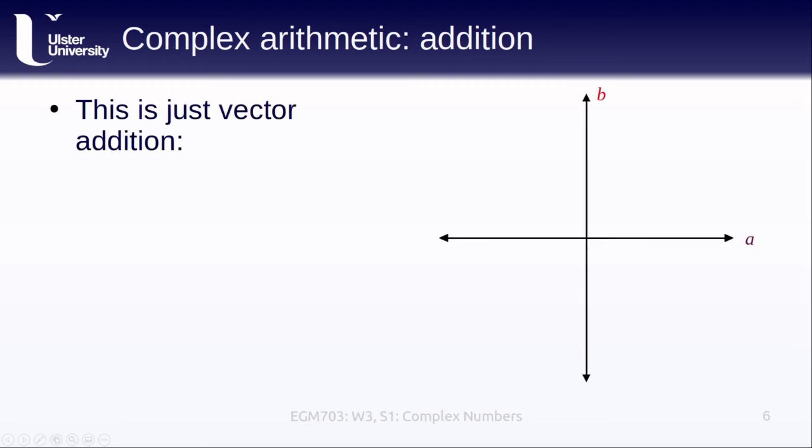Okay, so what if we want to add two complex numbers together? Well, because we can represent complex numbers as vectors, this is just vector addition. So let's say we have one number, z₁, and another number, z₂. So then z₁ + z₂ is just the sum of these two vectors.